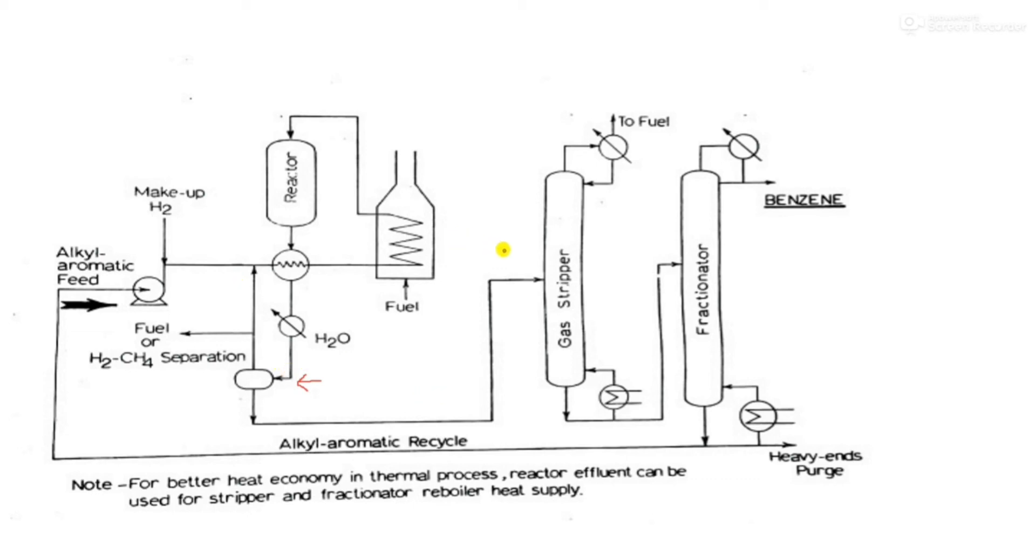In the gas stripper, light ends are removed from the top while heavier products from the bottom are sent to the fractionator. From the fractionator, benzene is separated at the top.